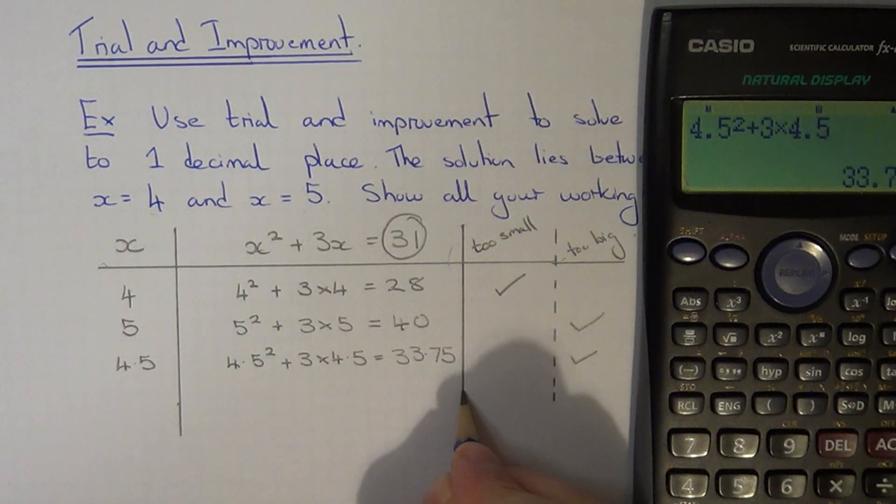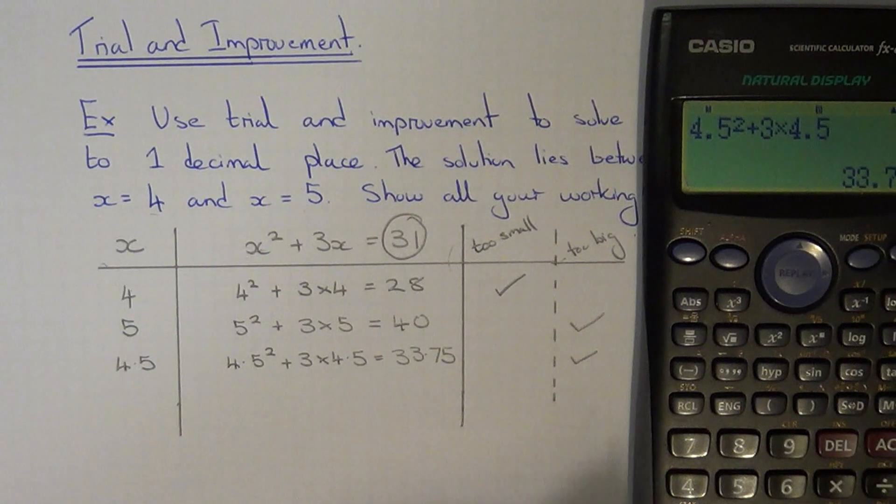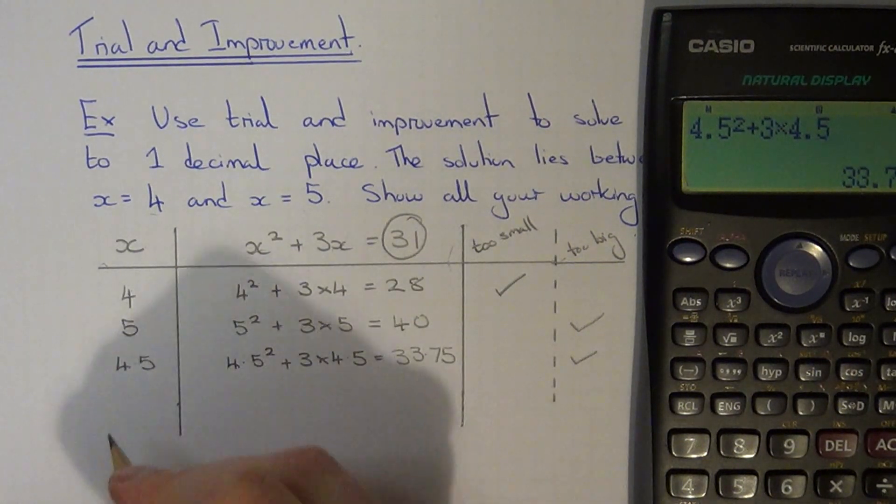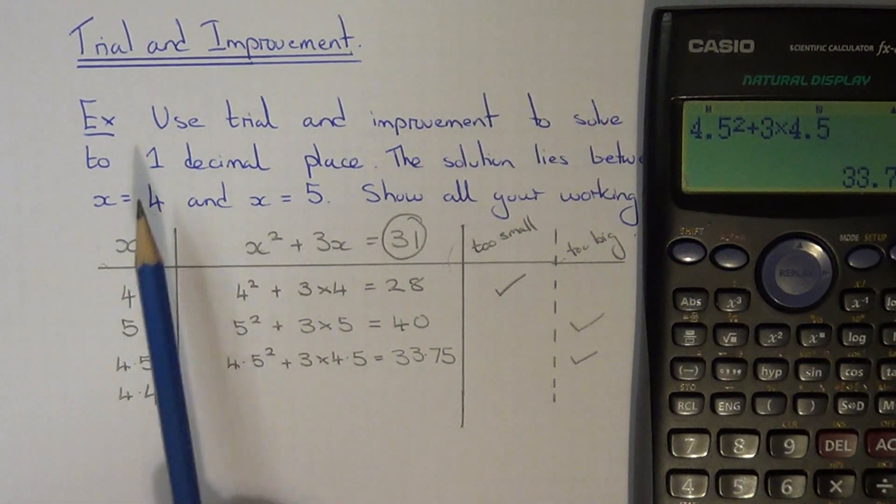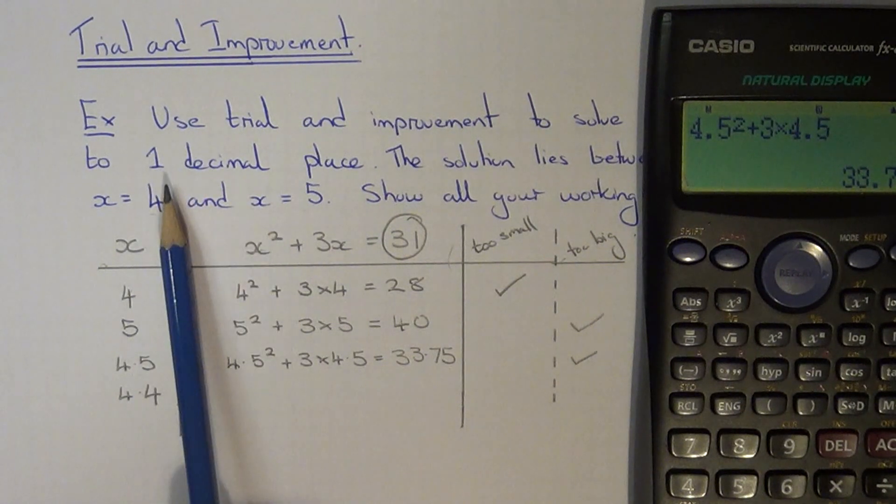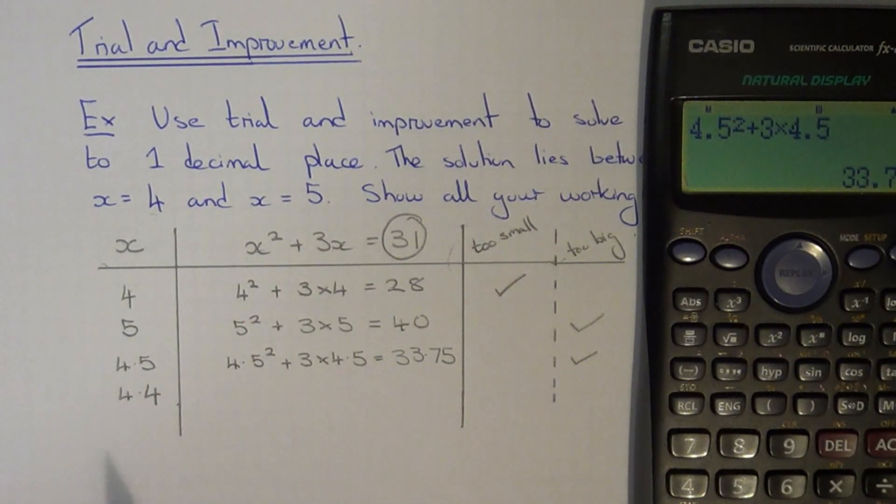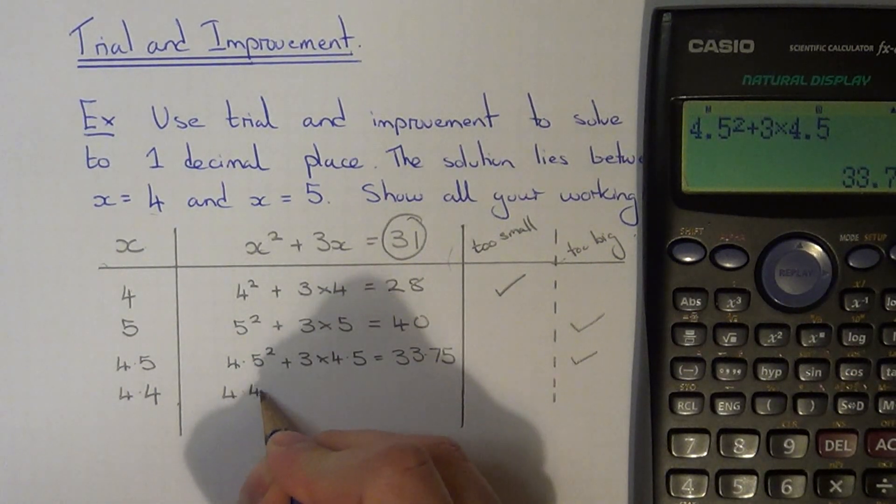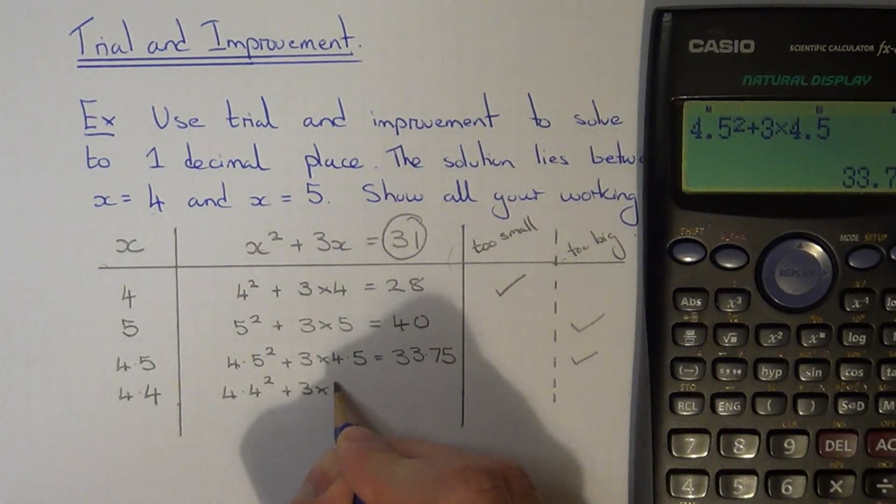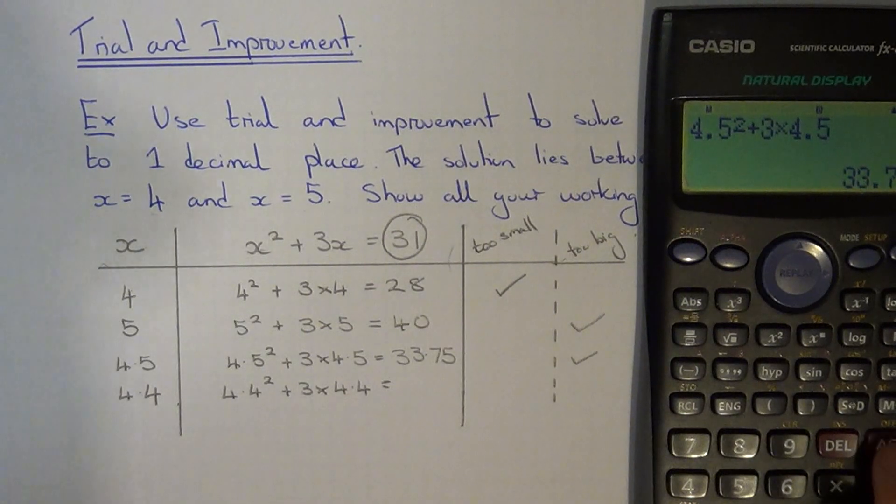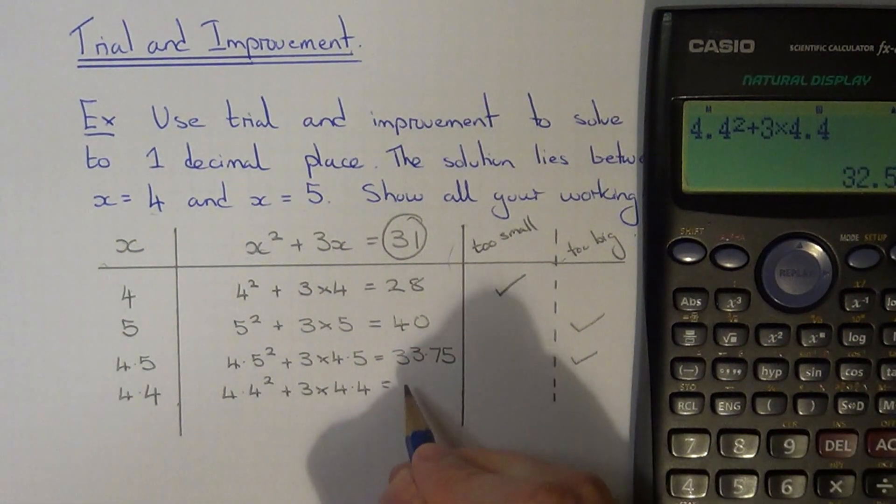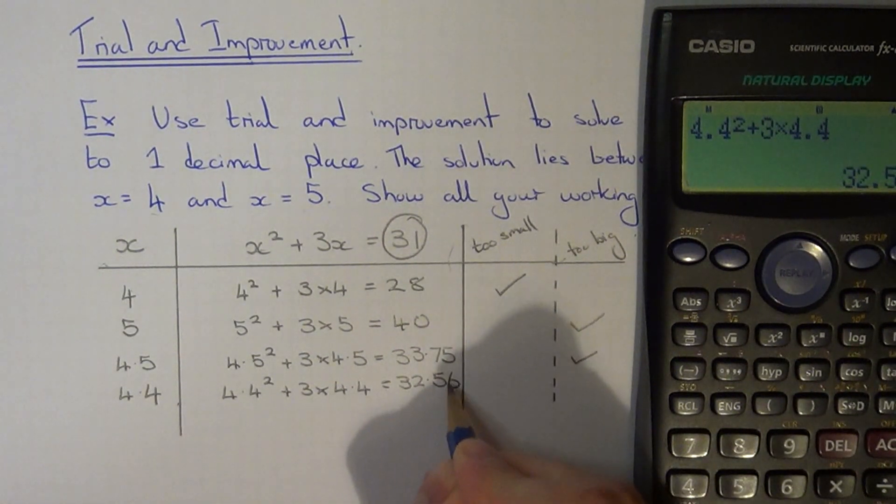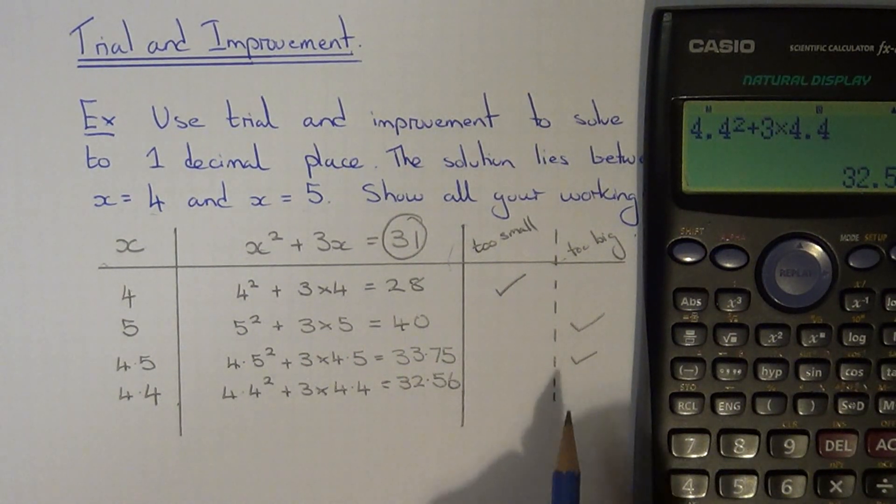So since 4.5 is too big we need to now go down by 0.1 and do 4.4. The reason why we do this is because in the question it says the answer has to be to one decimal place so we only need to go up or down in 0.1's. So let's see if 4.4 is closer to 31.